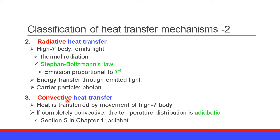The third one is convective heat transfer. In convective heat transfer, heat is transferred by movement of a high-temperature body. If the heat transfer is completely convective, the temperature distribution follows the adiabatic temperature gradient. We have already learned the adiabatic temperature gradient in section 5 of chapter 1, adiabat.